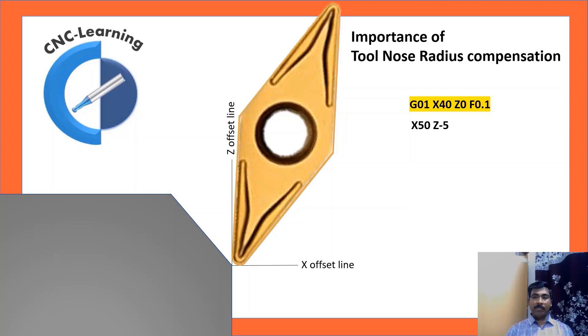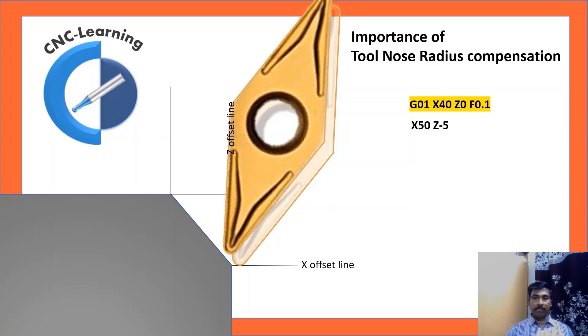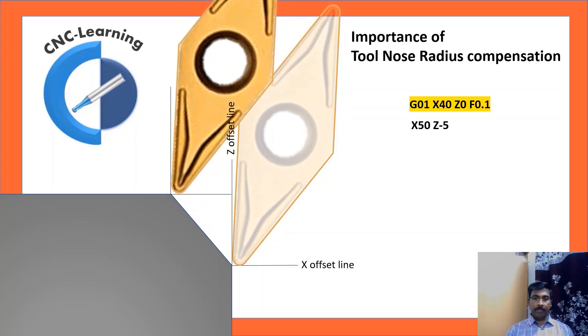Now next command is X50Z-5, it is for making a chamfer. Now you can see, the line connecting the tangent points, there is a small gap. The chamfer produced will be less than what is programmed by this amount.